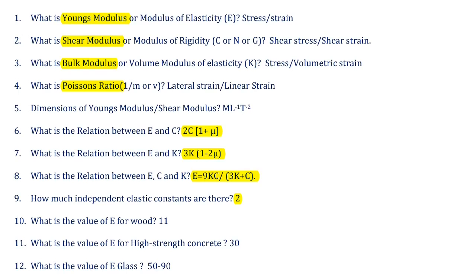Third question: what is Bulk modulus? Don't confuse Shear modulus and Bulk modulus — they are different. Bulk modulus is nothing but the ratio of stress to volumetric strain, and it is also known as volume modulus of elasticity, denoted by symbol K. To summarize: E means Young's modulus; C, N, or G means Shear modulus or modulus of rigidity; K means Bulk modulus.